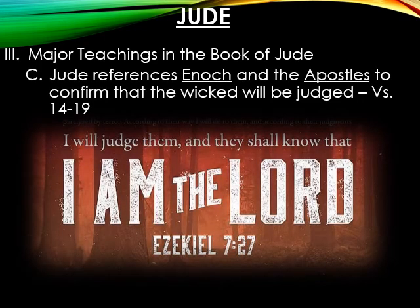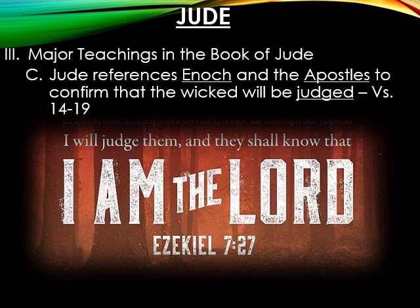Jude references Enoch and the apostles to confirm that the wicked will be judged. Enoch prophesied that the Lord would one day come with ten thousands of his holy ones to execute judgment upon the wicked and ungodly on the earth. The apostles prophesied that in the last times, those would come who are selfish and try to divide God's people — but we must always remember those individuals will meet their end and be judged.